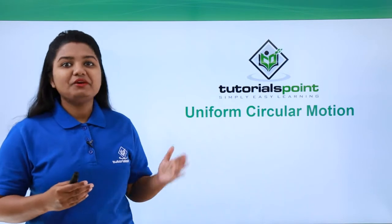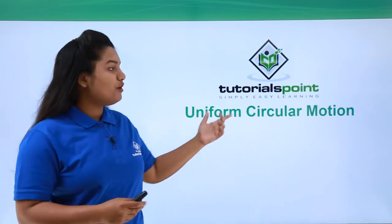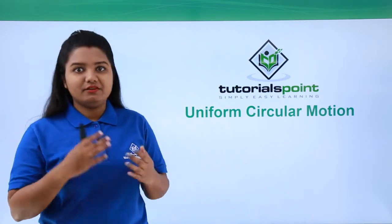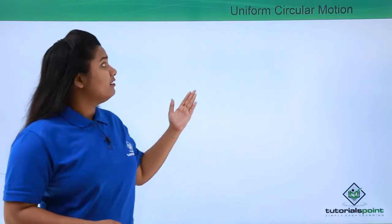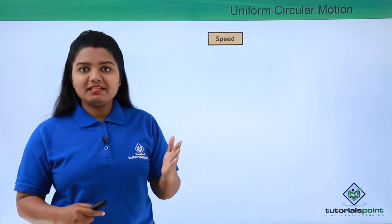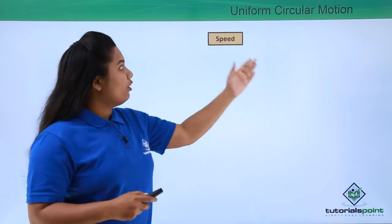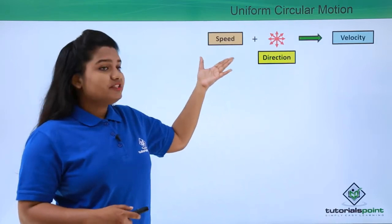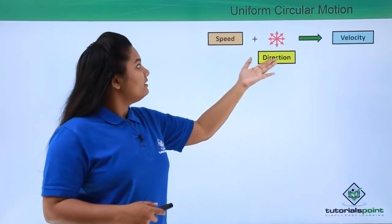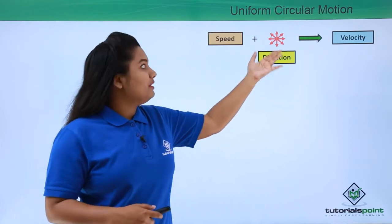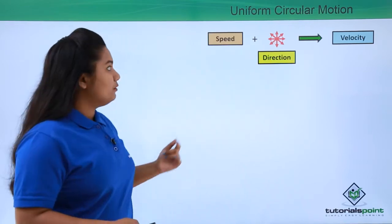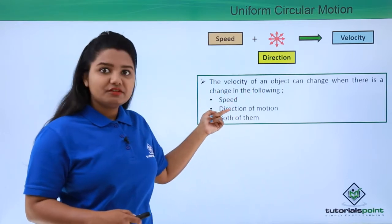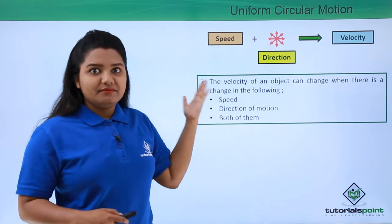Hello everyone. In this video we'll be discussing uniform circular motion. We have already learned a lot about speed and velocity. Speed is the distance covered by a body per unit time, and speed along with the direction of the body is termed as velocity. So whenever there is a change in either speed or the direction of the body, there will be a change in the velocity of the body.